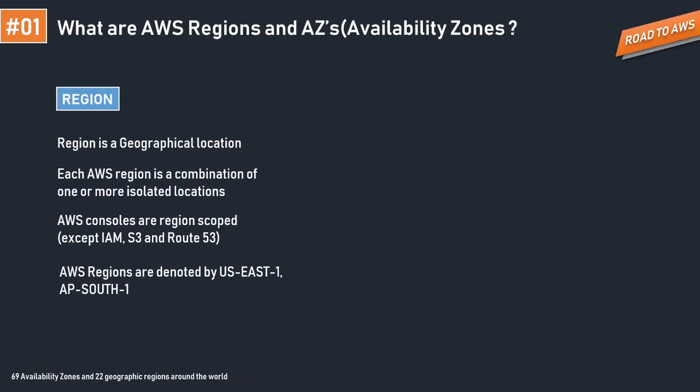As we all know, AWS or Amazon Web Services is a cloud service provider that provides you with servers and services you can use on demand and scale easily. There will be some place where they store these services, and that's where AWS regions come in. An AWS region is nothing but a geographical location, and each geographical location is a combination of one or more isolated locations.